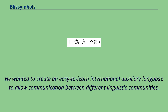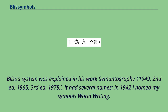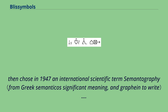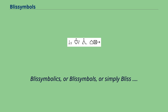He wanted to create an easy-to-learn international auxiliary language to allow communication between different linguistic communities. He was inspired by Chinese characters, with which he became familiar at Shanghai. Bliss's system was explained in his work Semantography — it had several names. In 1942 he named his symbols World Writing, then chose in 1947 an international scientific term Semantography. His friends argued that it is customary to name new writing systems after the inventors — Bliss Symbolics, or Bliss Symbols, or simply Bliss.